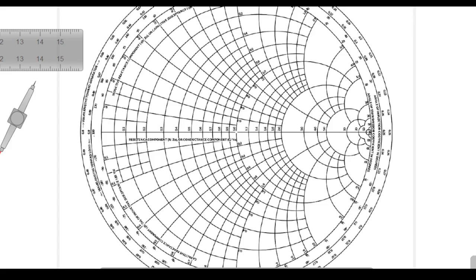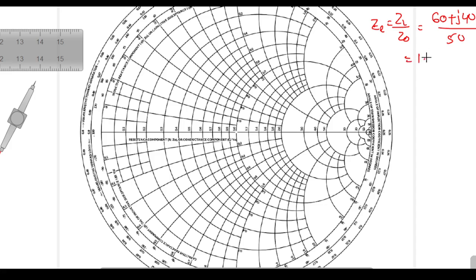Now in the Smith Chart — what is the Smith Chart and how to use it, I will explain in a separate video. Here we will just start with the problem. As you know, in the Smith Chart everything has a normalized impedance value or admittance value. So I need to find the normalized ZL value: ZL normalized equals ZL divided by Z0, which is 60 plus j40 divided by 50, giving 1.2 plus j0.8.